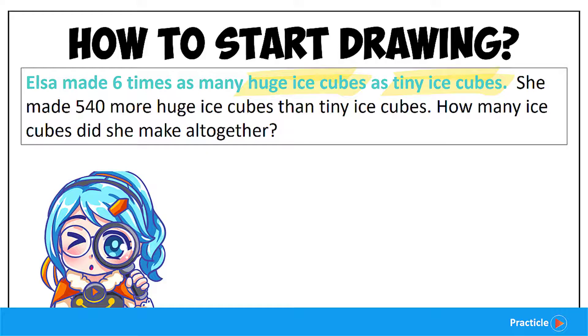So how do we start to draw the comparison model? We'll first write the name of the two objects on top of each other. So we have huge ice cubes and tiny ice cubes.